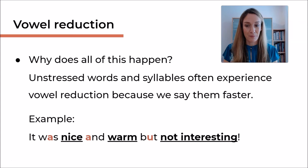Here is an example. It was nice and warm but not interesting. So the words in bold that are underlined are all the words that are stressed in the sentence. Nice, warm, not interesting. They carry the main meaning of the sentence. The other words are not stressed—it, was, and, but—because they don't really carry meaning.